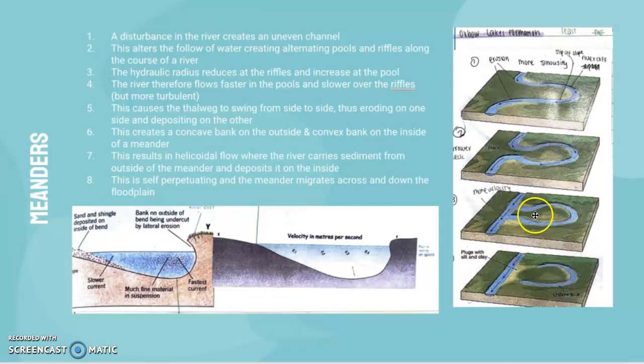Eventually, the velocity is so high that water tends to reduce flowing in the meander neck, so that kind of dries up and then you get this oxbow lake formation.